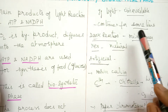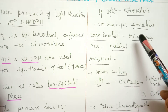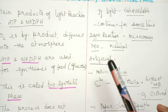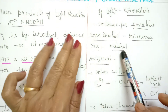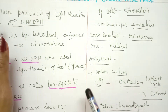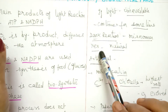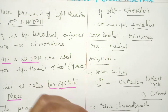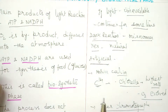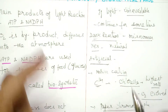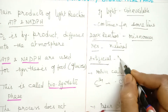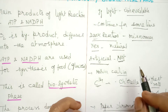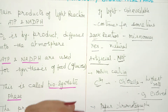Whether the term 'dark reaction' is a misnomer — meaning a wrong name — can be answered in two ways. Under natural conditions, if light is not available it may continue for some time and then stop, so calling it dark reaction is a wrong name. However, under artificial conditions it is not a misnomer, because it can continue even in the dark if we provide the products of light reaction, that is ATP and NADPH2.